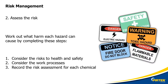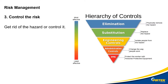Risk management, step two: assessing the risk. Work out the harm the chemicals can cause by considering the risks to health and safety, considering the workplace processes, and recording the risk assessment for each chemical. Step three: controlling the risk. Here's our old friend, the hierarchy of controls. Can we eliminate the risk? Can we substitute the chemical with something else? Can we use engineered solutions to reduce the risk? Are there any management or training options we can utilise to minimise the risk? Is there any PPE that could minimise the risk?